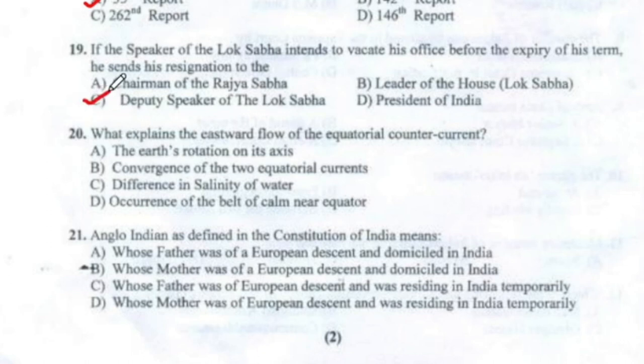Question 20: What explains the eastward flow of the equatorial counter current? It is the Earth's rotation on its axis.